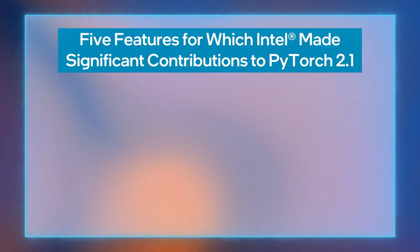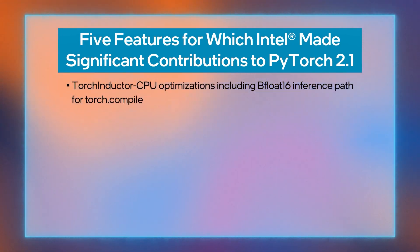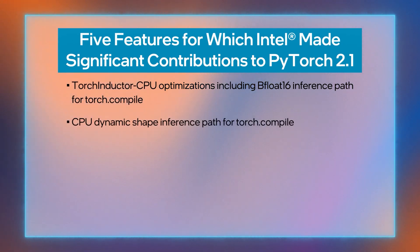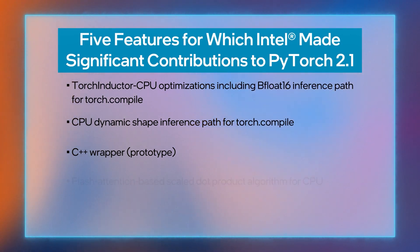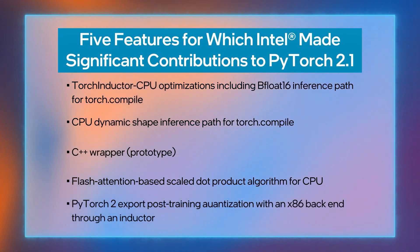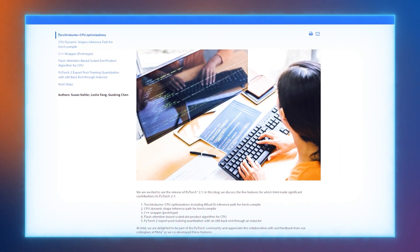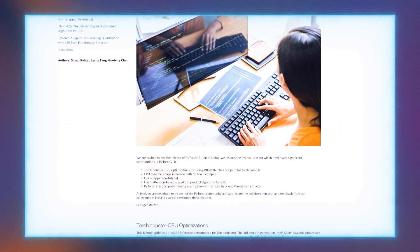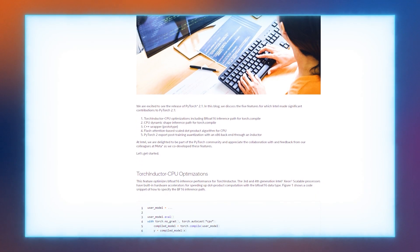Our final topic for today is the blog PyTorch 2.1 Contains New Performance Features for AI Developers. This blog discusses the five features for which Intel made significant contributions to PyTorch 2.1: Torch Inductor CPU optimizations including bfloat16 inference path for torch.compile, CPU dynamic shape inference path for torch.compile, C++ wrapper, flash attention-based scaled dot-product algorithm for CPU, and PyTorch 2 export post-training quantization with an x86 backend through an inductor. Read the blog to get details about each of these five features, and try out PyTorch 2.1 to realize the performance benefits for yourself.